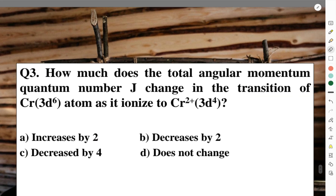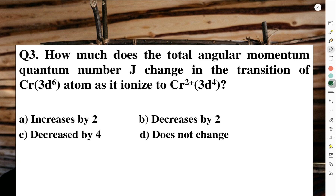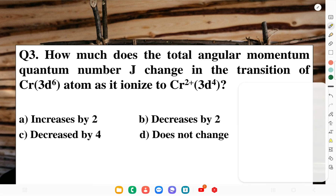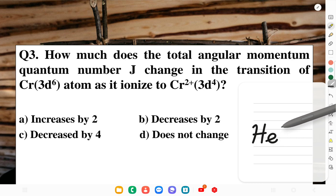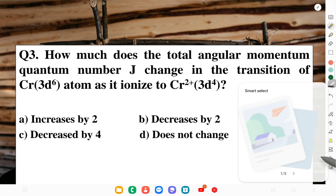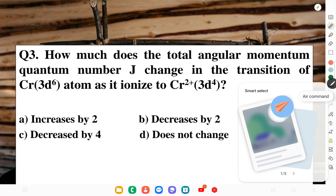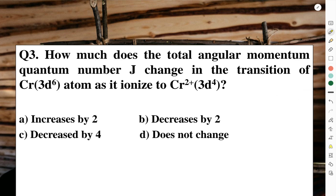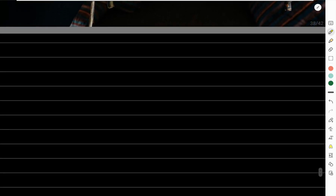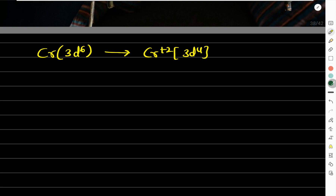The next question asks how much the total angular momentum quantum number j changes in the transition of chromium 3d⁶ atom as it ionizes to chromium²⁺ with configuration 3d⁴. We will apply Hund's rules to find the ground state terms for both configurations.